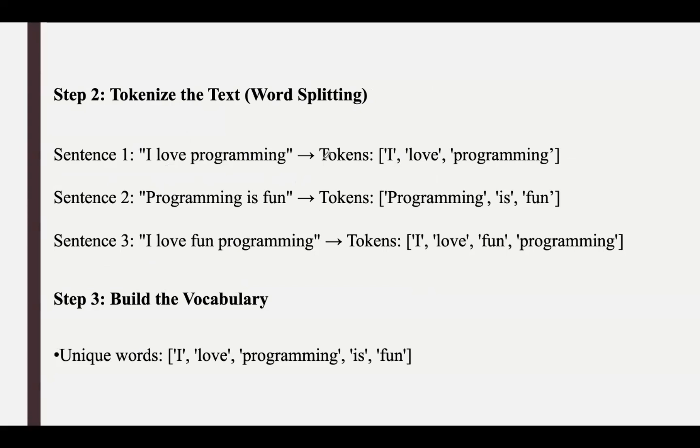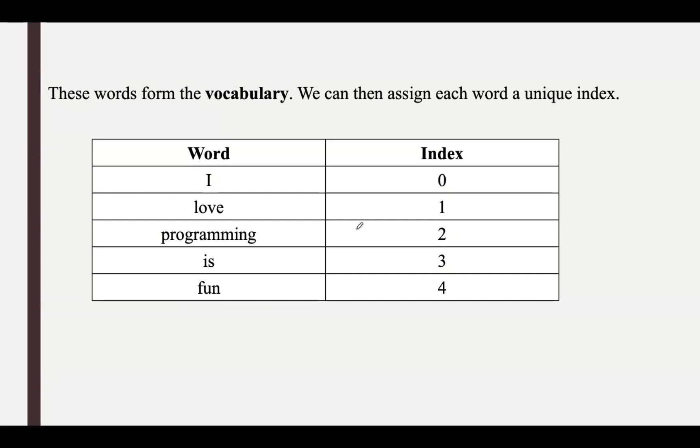The tokens are all the unique words present in the entire corpus. From these sentences, we need to pick the unique words. We first remove duplicates and get the unique words: I, love, programming, is, fun. These words are repeated multiple times in the three sentences, but we should consider them only once. These words form the vocabulary, and we assign each word a unique index. First word 'I' gets index 0, 'love' gets index 1, and so on.